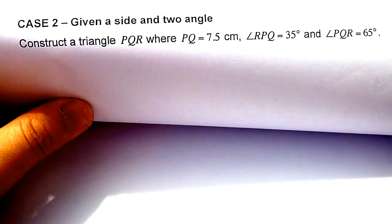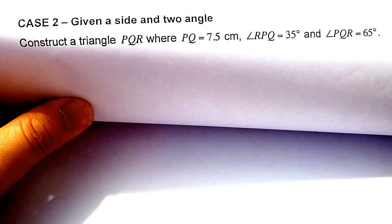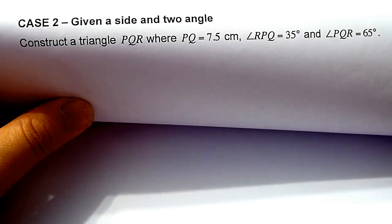In this case, we are given a side of a triangle and two angles. PQ measures 7.5 cm, angle RPQ equals 35 degrees, and angle PQR equals 65 degrees. First of all,